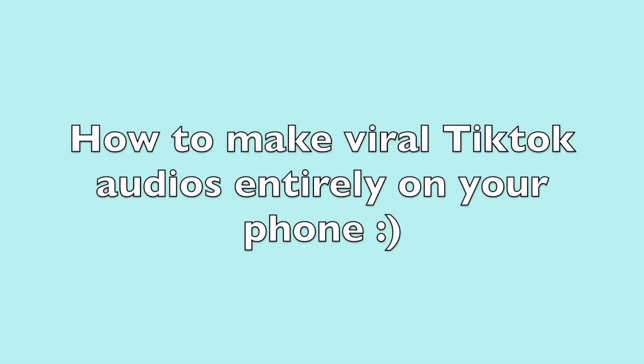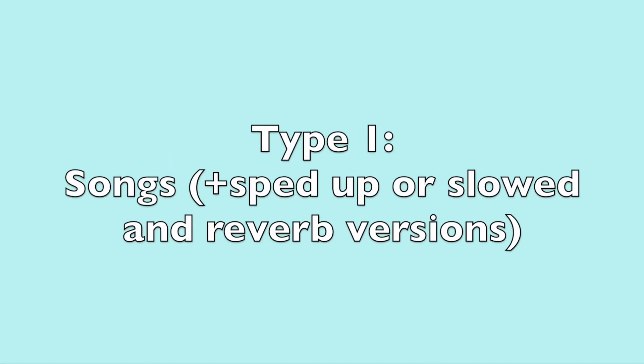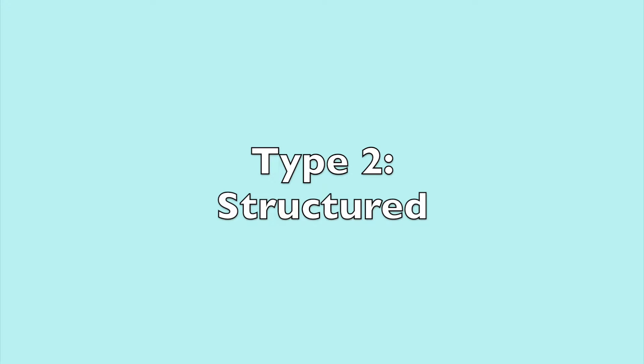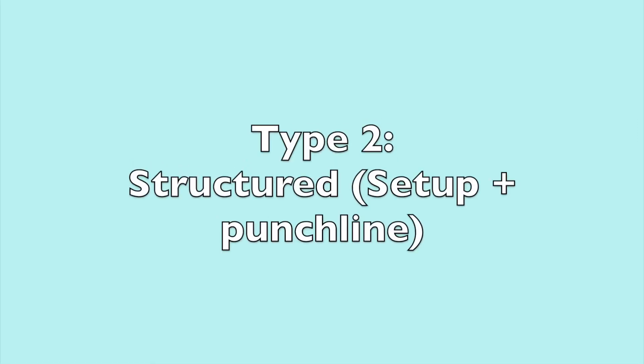In this video I'll show you how you can make viral TikTok audios entirely on your phone. Before you make one you have to understand what types of audios go viral. Basically there are two different types: the first are just songs, oftentimes sped up or slowed down versions, and the other kind are audios with a specific structure to them. 99 times out of 100 these audios follow the format of what I like to call the setup and punchline. This doesn't mean that your audio has to be meant for funny videos, but it just means that it uses a two-step process of delivering the content of the TikTok.